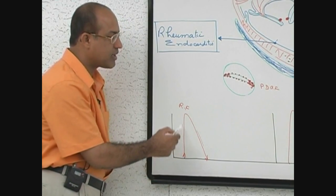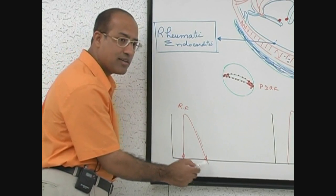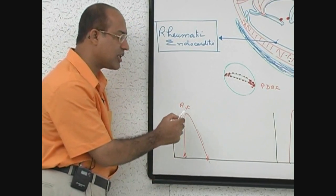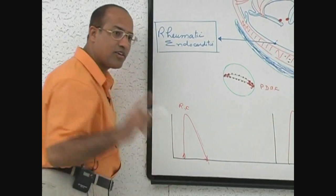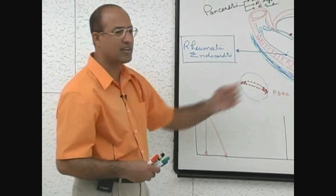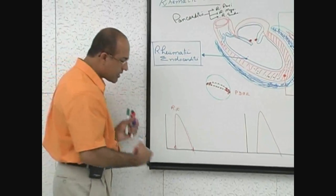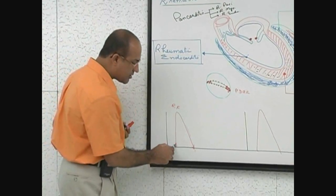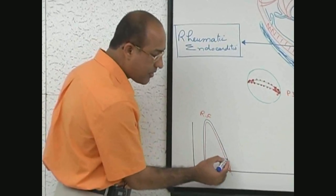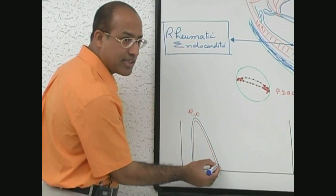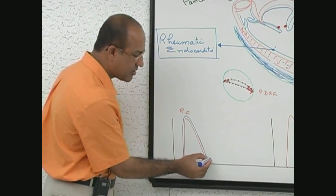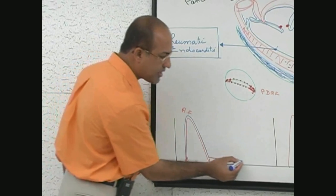Acute rheumatic pericarditis completely heals. Acute rheumatic myocarditis either kills or completely heals. The real problem is with acute rheumatic endocarditis. That endocardial inflammation comes down but does not heal completely - it will heal with fibrosis, distortions, and adhesions. So there will be some residual damage.